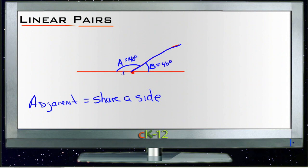Because the two of them together need to total 180 degrees, you can also see that linear pairs are supplementary angles.